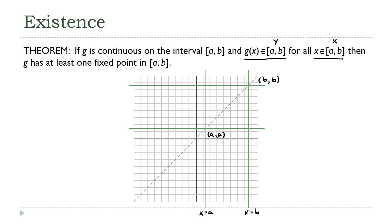And now I think you can start to see what's happening. If we start over here on the left side somewhere on this line x equals a and the function is going to go all the way over to the other side, there is no way to get over to that line x equals b without at some point crossing that diagonal, and that point is going to be our fixed point.